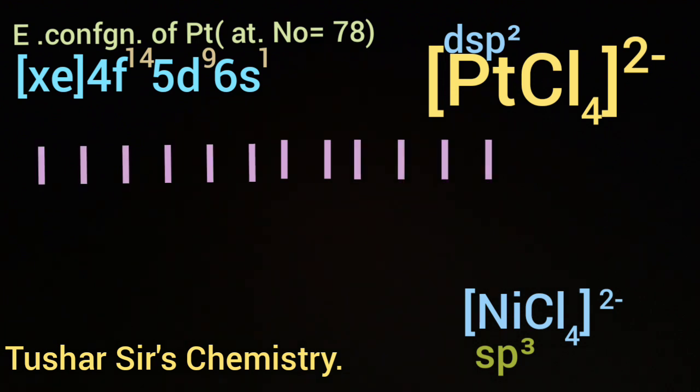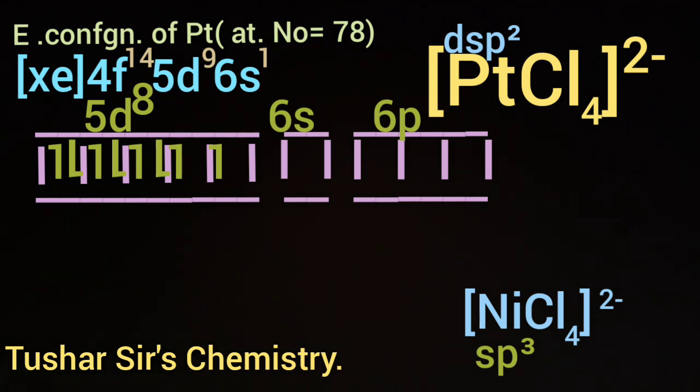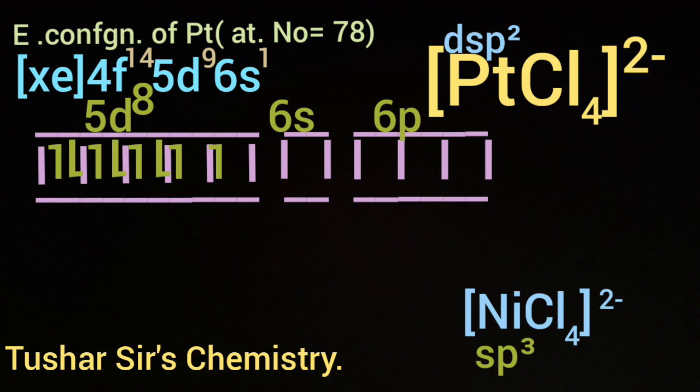Let us do the hybridization. The atomic number of Pt is 78. The oxidation number of Pt in PtCl₄²⁻ is +2. The electron configuration of Pt²⁺ will be xenon at the core, 4f¹⁴, 5d⁹, 6s¹, minus 2 electrons.